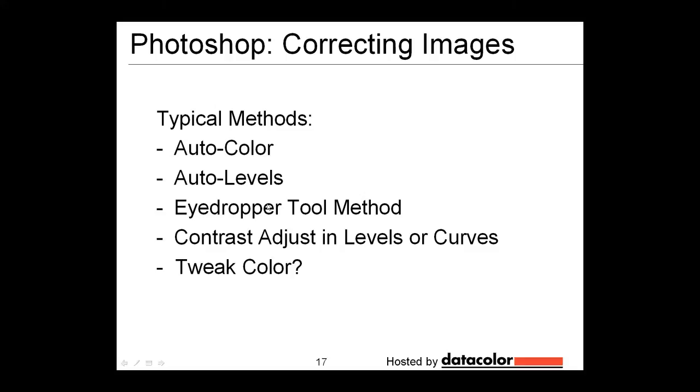So if you're in Photoshop and you're going to correct the image, you have typical methods you can use. You can use auto color, auto levels, there's an eyedropper tool method. You can do contrast adjust and the levels of curves and then perhaps you tweak the color, although I'm not going to show you how to do that today. There are also ways of doing this manually and there are ways in which you can do this with the companion program Bridge. But that uses the eyedropper tool method and so we will have gone over that particular technique.